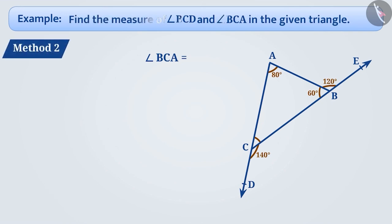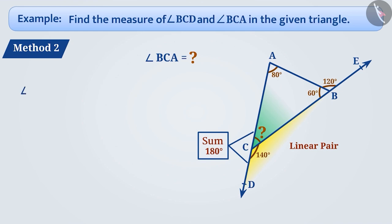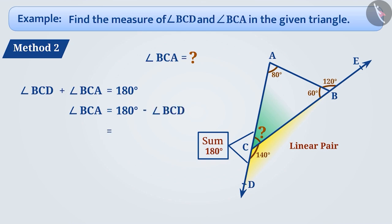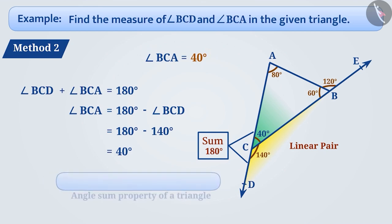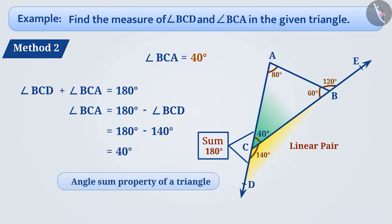We can find the measure of angle BCA using another method. As you can see here, angle BCD and angle BCA form a linear pair, so their sum will be 180 degrees. Angle BCD plus angle BCA is equal to 180 degrees. Therefore angle BCA is equal to 180 degrees minus angle BCD, which is equal to 180 degrees minus 140 degrees, which is equal to 40 degrees. We can also find the measure of angle BCA using the angle sum property of a triangle, which we will discuss in detail soon.